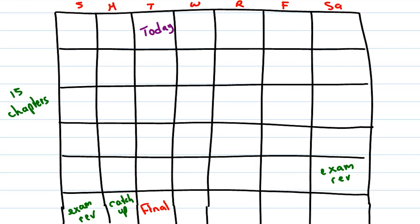That leaves us with quite a bit of time to go, 31 days and 15 chapters. So we're looking at an average of about one chapter every two days.